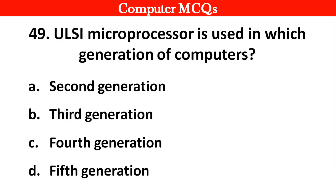Next question: ULSI microprocessors are used in which generation of computers? Options A. 2nd generation, B. 3rd generation, C. 4th generation, D. 5th generation. Right answer is option D: 5th generation.